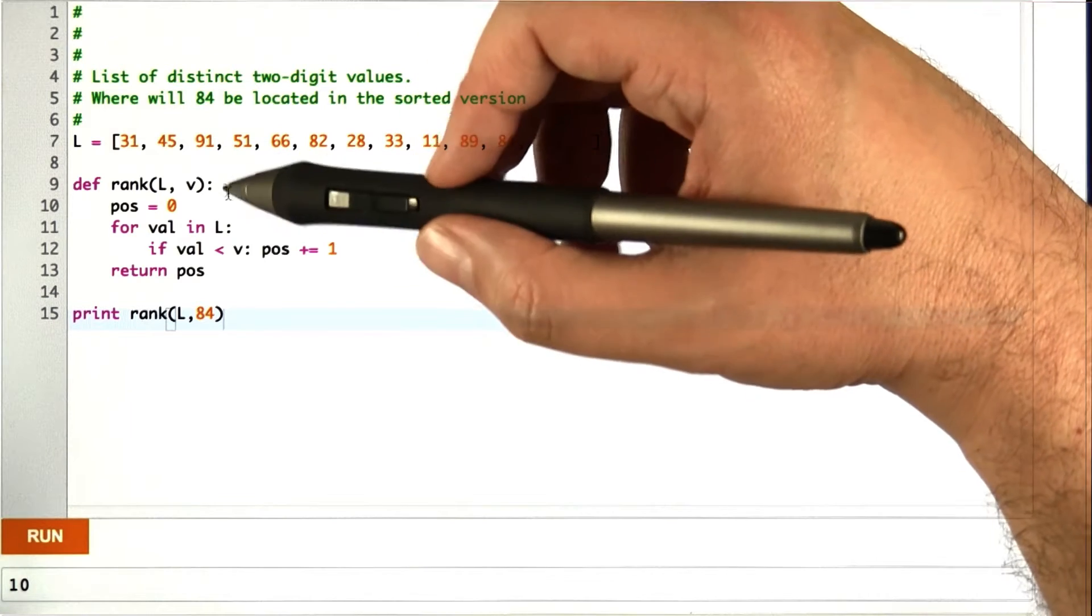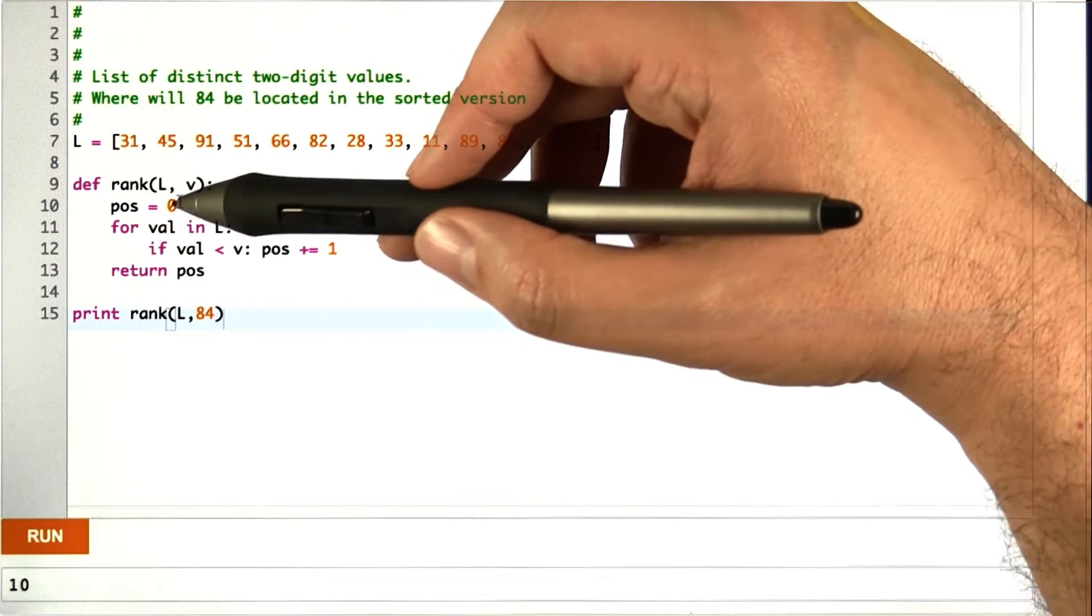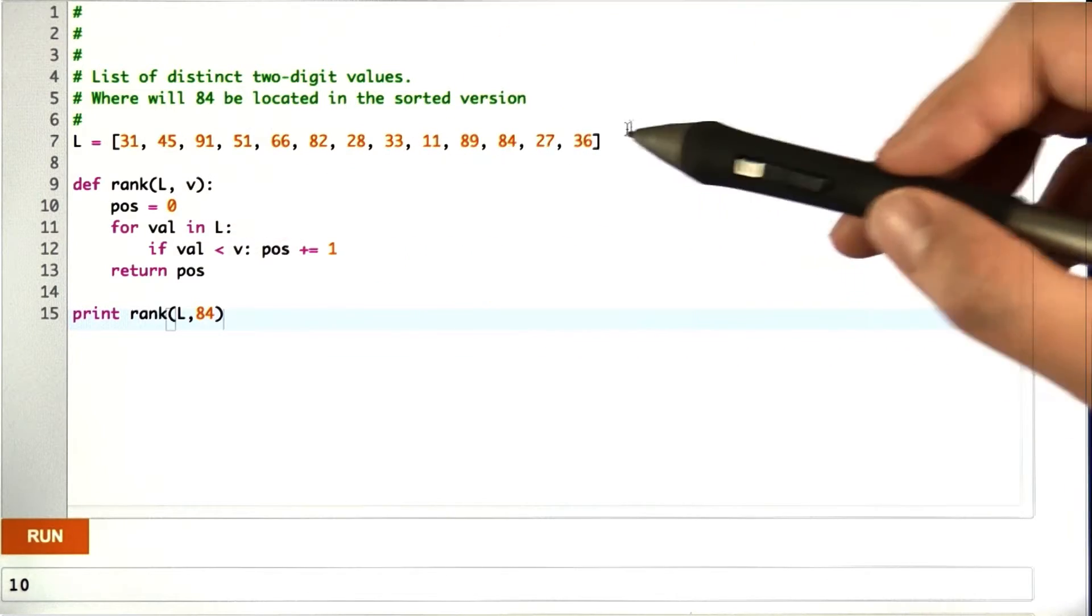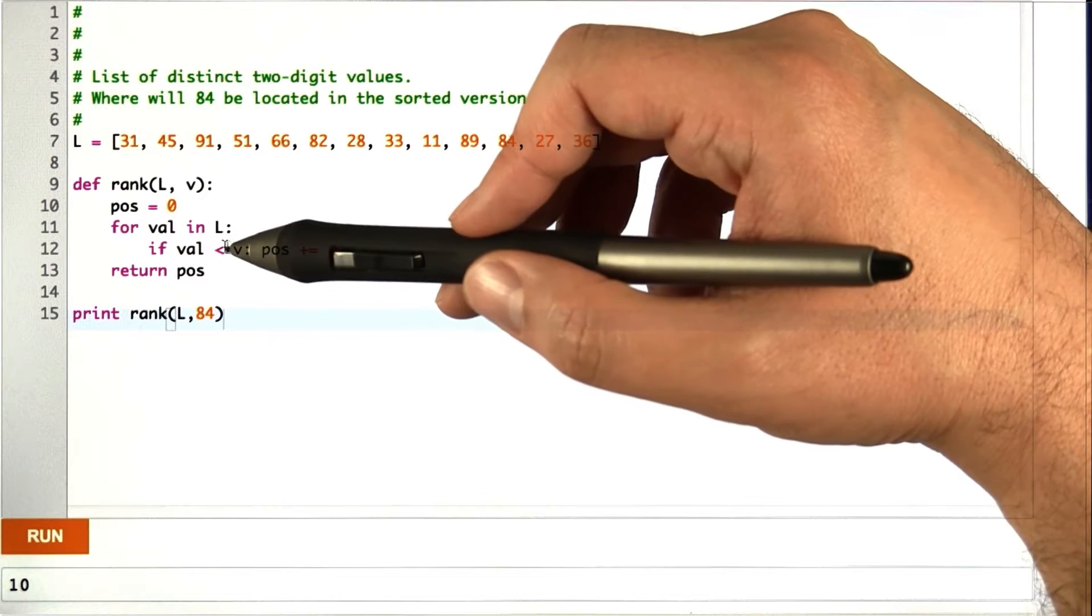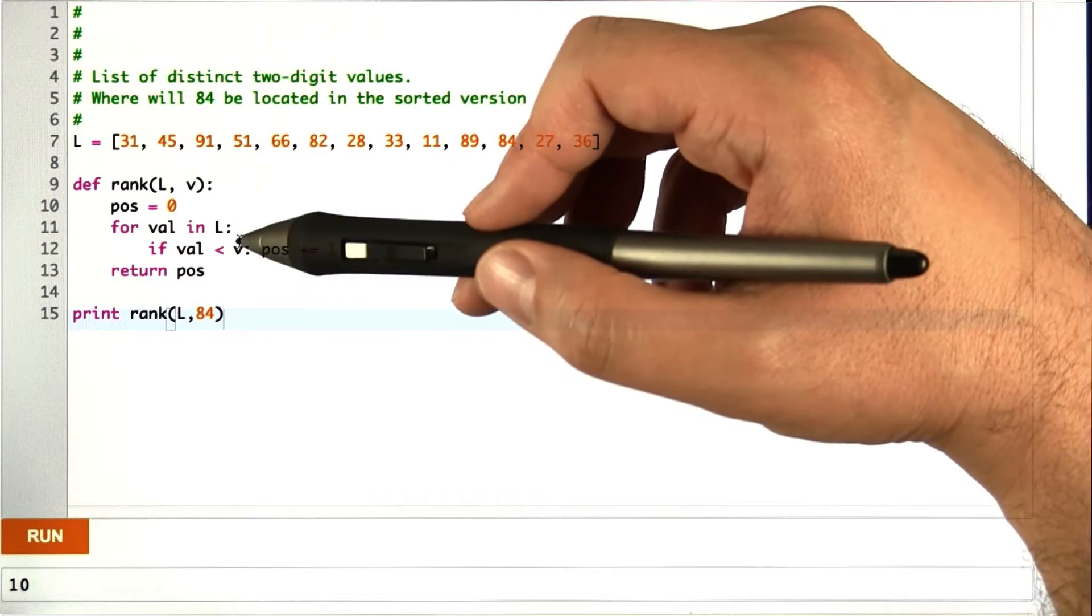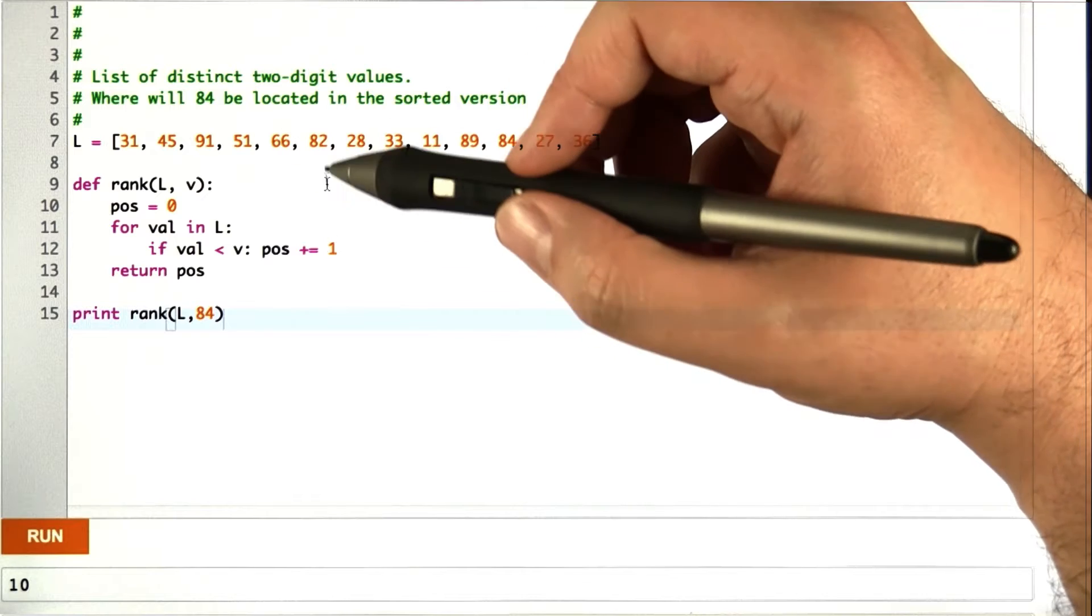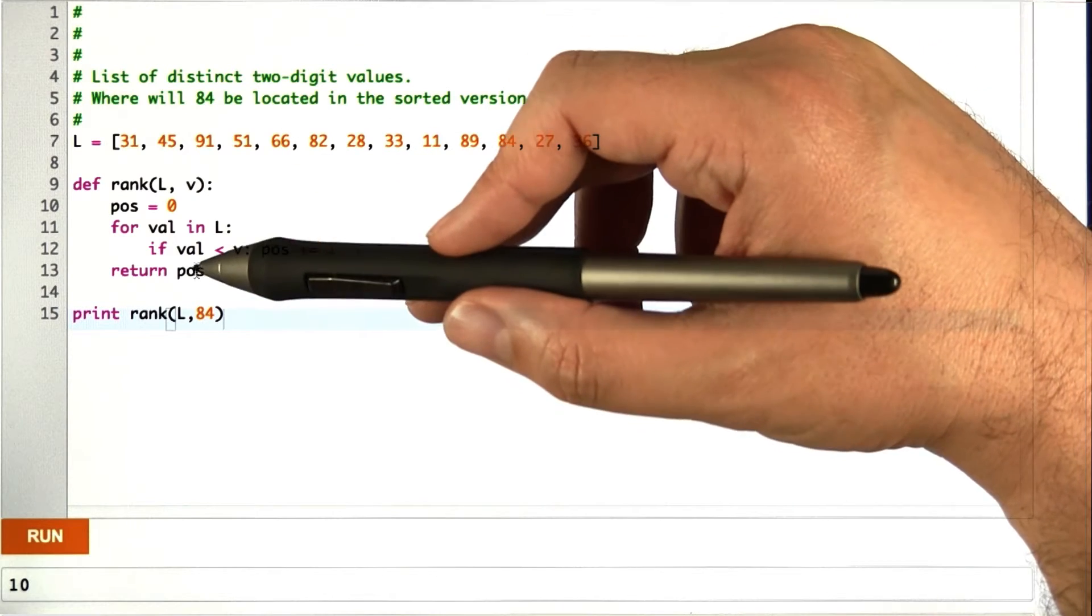All we need to do is count. We start off with this pass variable set to 0. We loop through all the values in the list, and for each one we say, well, is it smaller than the value we're asking about? If so, we increment the position, sort of bumps it one space to the right in the sorted list. And then when we're done, we just return that position.